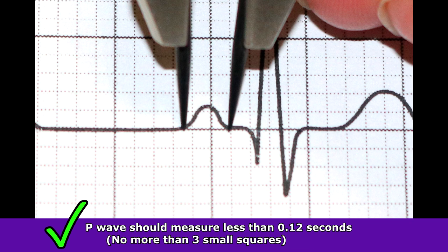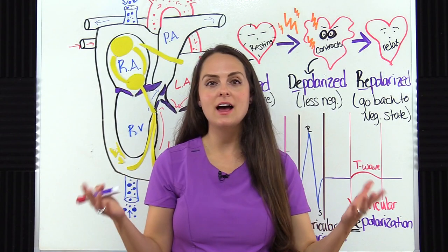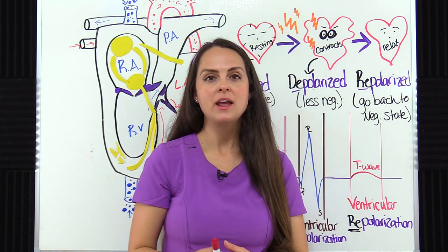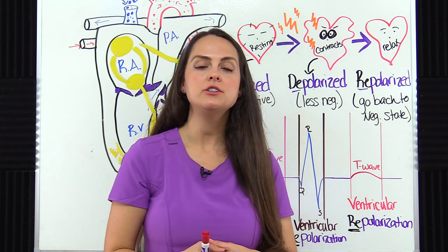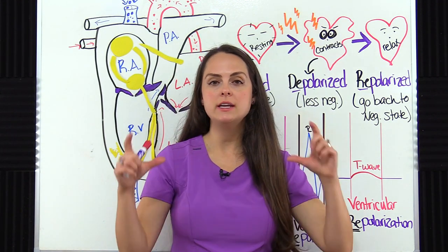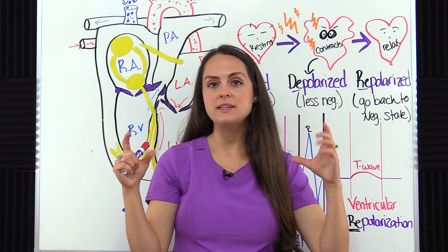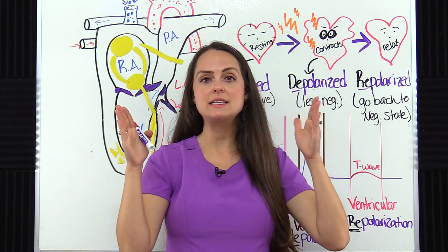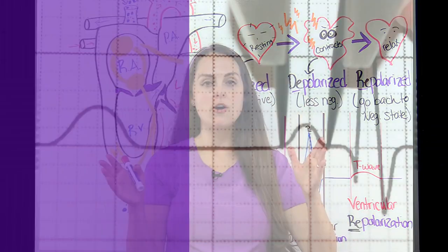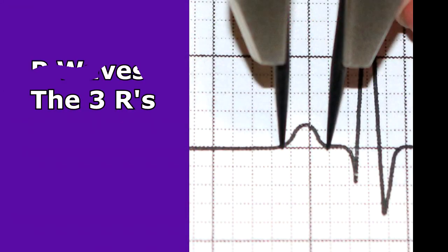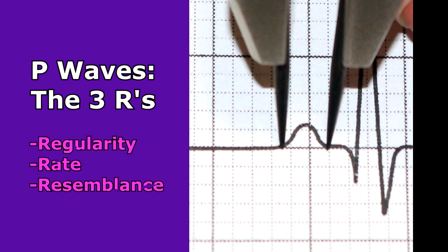Now let's apply this information and analyze a rhythm. To do this, use an EKG strip that's at least six seconds long, and we're thinking of the three R's: regularity of those P waves, the rate, and the resemblance.